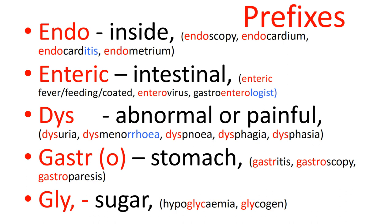'Endo' means inside. So endoscopy means to look inside. A colonoscopy looks into the colon, a gastroscopy looks into the stomach, a cystoscopy looks into the bladder — all are forms of endoscopy. The endocardium is the inside layer of the heart; the outside layer is the pericardium, the middle layer is the myocardium. Endocarditis is inflammation of the endocardium. The endometrium is the inside layer of the uterus.